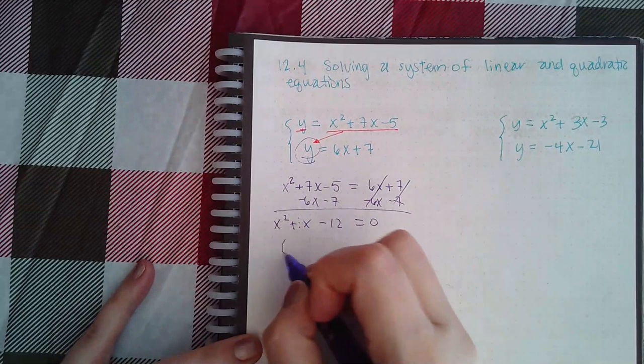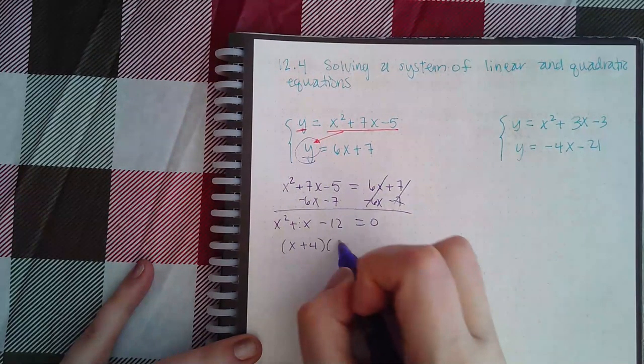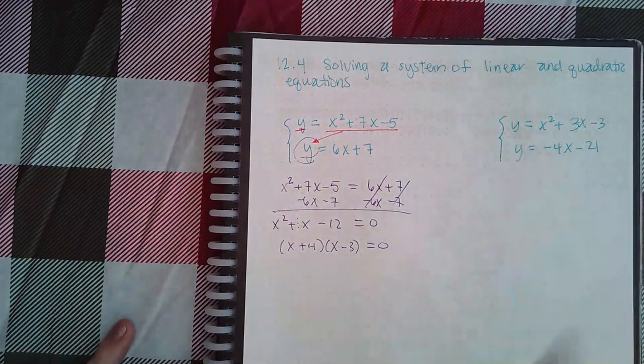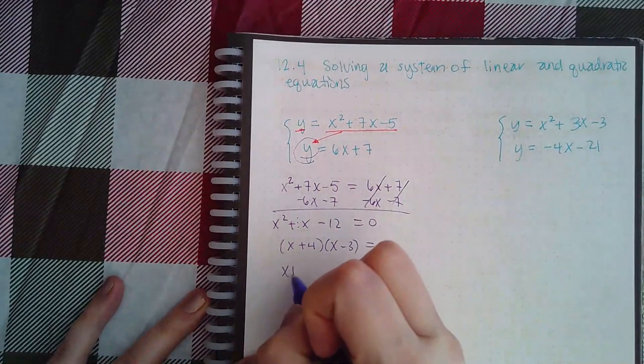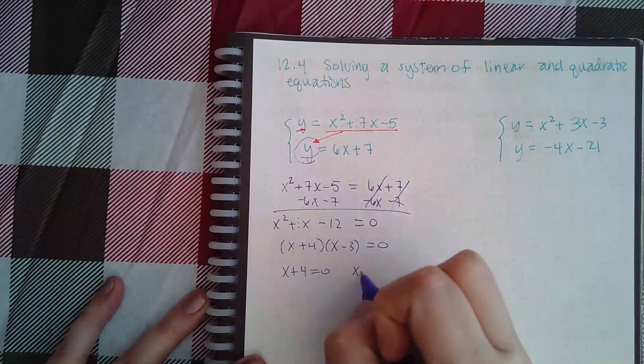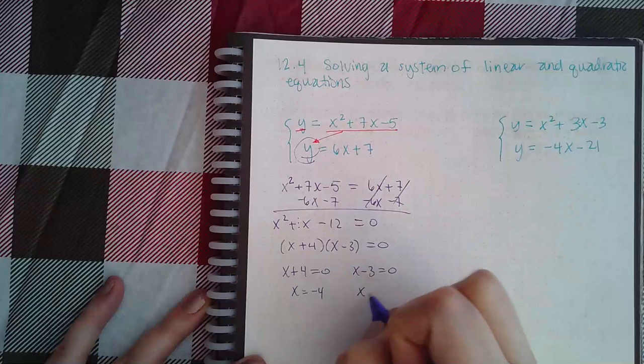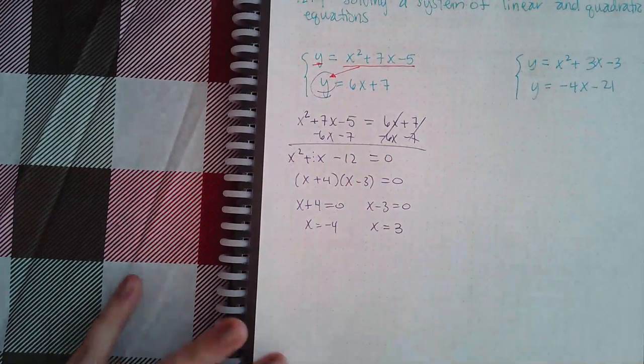Then I can figure out what this is: (x+4)(x-3). If you don't want to factor or you can't factor, do the quadratic formula. I get this factor equal to 0, this factor equal to 0, so I get x equals negative 4 and x equals 3.